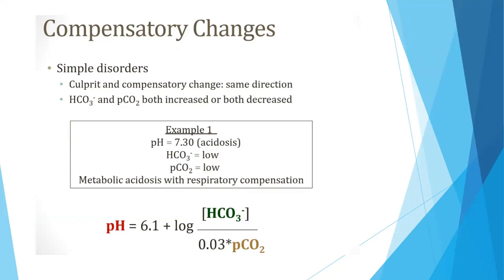In simple disorders, the culprit and compensatory changes always go in the same direction — bicarbonate and pCO2 both increase or both decrease. For example, if pH is 7.3 indicating acidosis and bicarbonate is also low, it is metabolic acidosis. If pCO2 is also low, it is metabolic acidosis with respiratory compensation — both changes go in the same direction.